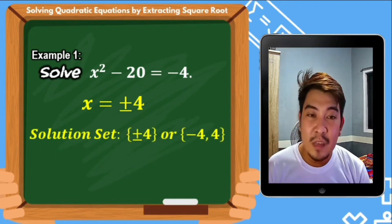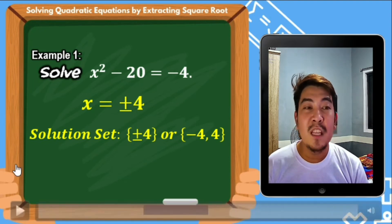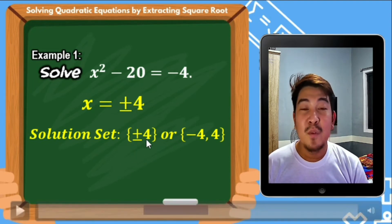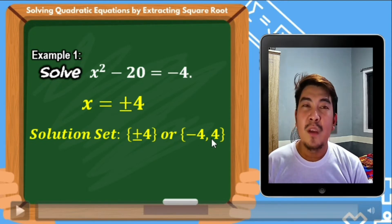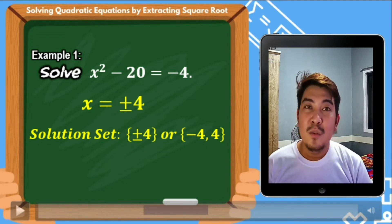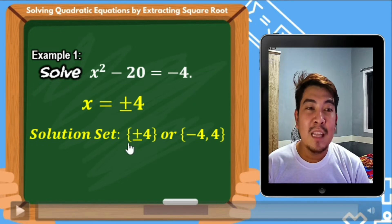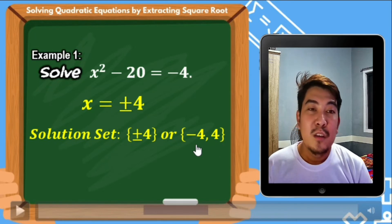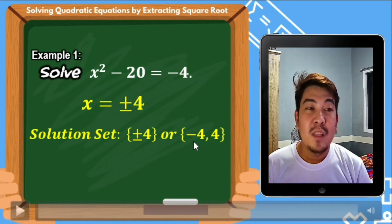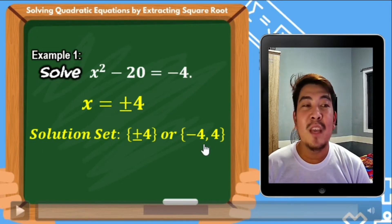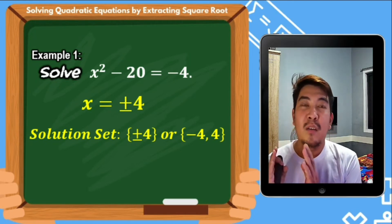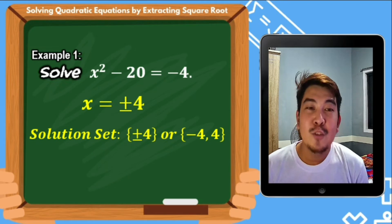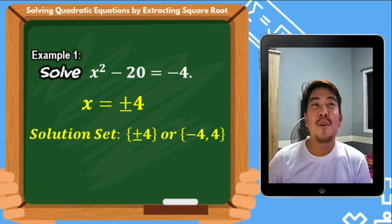Therefore, if we are going to find the solution set, the solution set will be the numbers containing positive and negative 4, which can be written in curly braces and separated as negative 4, positive 4. When writing the solution set, the order of solutions can vary, but it is better to arrange them in ascending order — the smaller solution first, followed by the larger solution. That finishes example number 1.